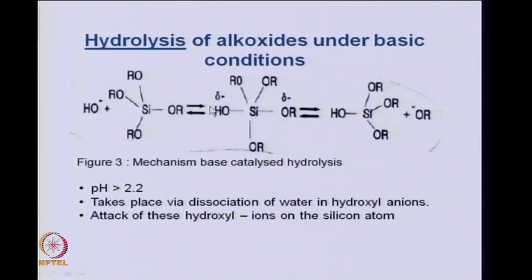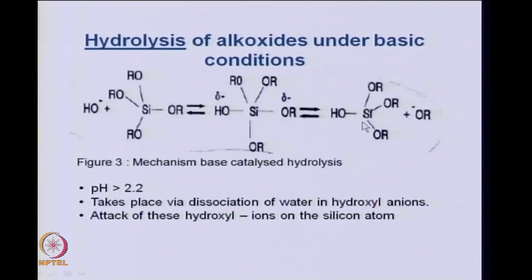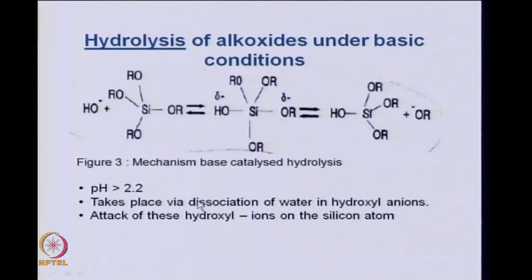In basic conditions, the O⁻ group attacks the tetraalkoxysilane, creating a partial negative charge, and then the alkoxide (OR⁻) leaves, resulting in a new silicon-hydroxyl linkage. This base-catalyzed hydrolysis takes place at pH greater than 2.2 and involves dissociation of water, formation of hydroxyl ions, and their attack on silicon.